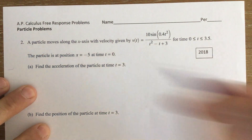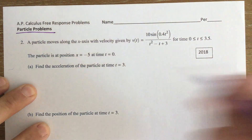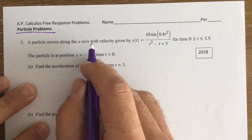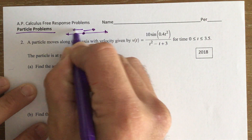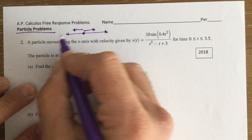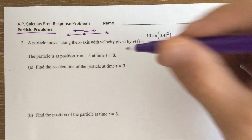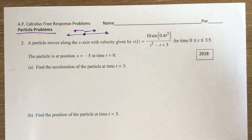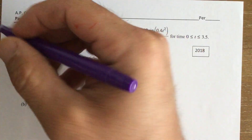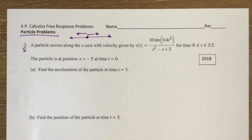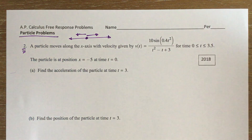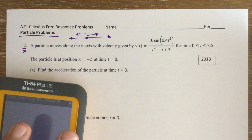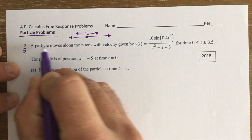Here we have a new type of problem — a particle problem. It always starts with 'a particle moves along an x-axis,' and that particle is either moving in the positive or negative direction, with a positive or negative velocity. This kind of problem will likely be on the test. This specific problem requires a calculator, so on a no-calculator section, the function would be easier to differentiate or integrate.